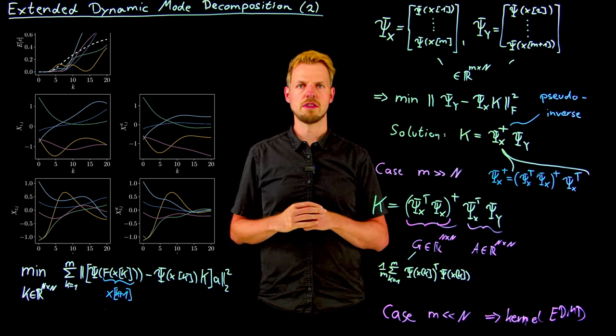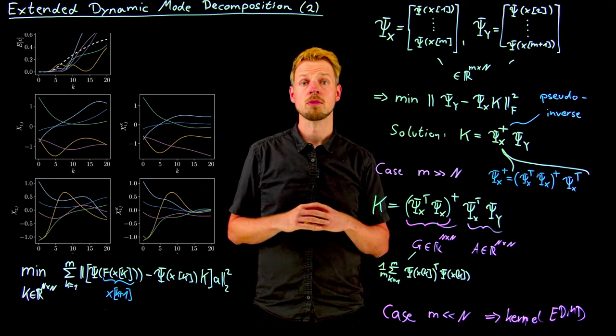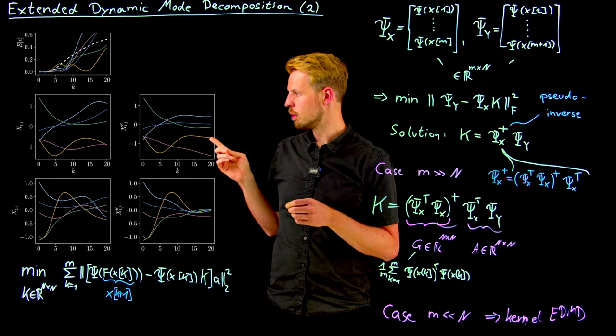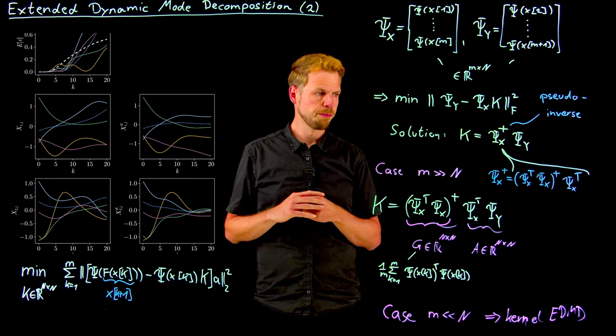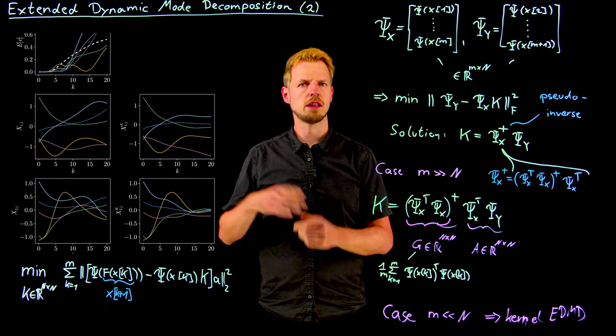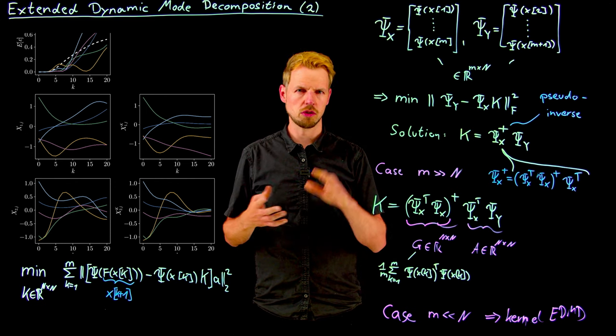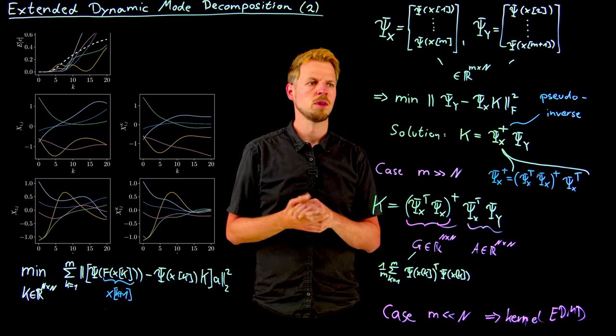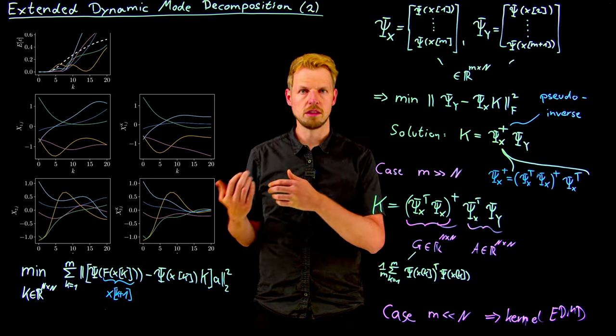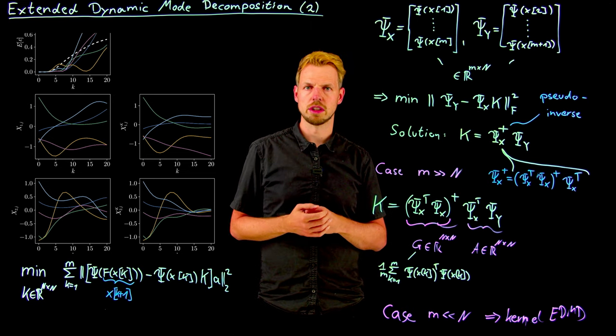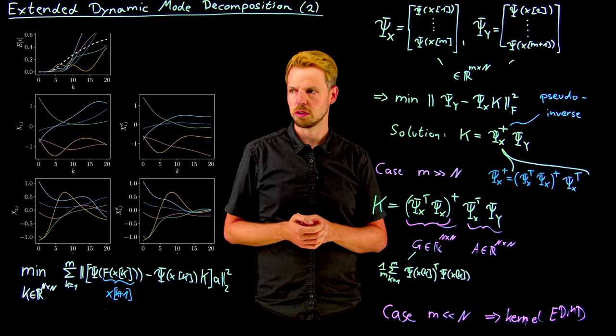And if you think about a nonlinear system that we can now predict using a matrix vector multiplication, this is a huge advantage for practical algorithms. Of course, we need to be careful about the approximation accuracy. And we have discussed this in a lot of detail in the previous video where we talked about these Koopman invariant subspaces. And so clearly this is violated here and this is why we do not get a perfect prediction.